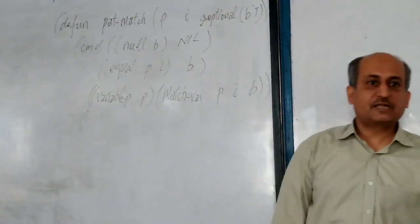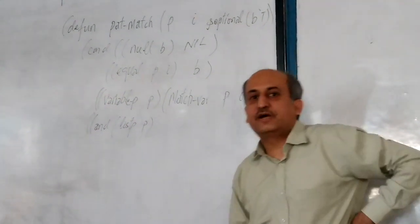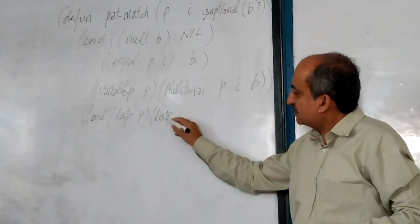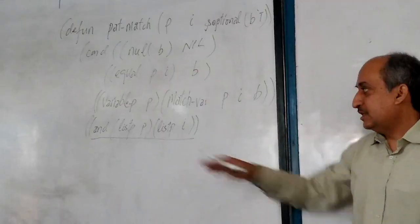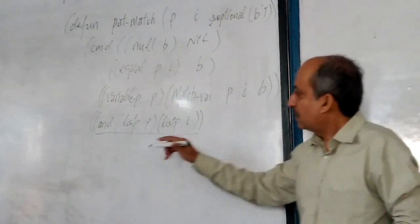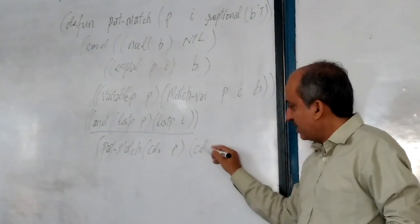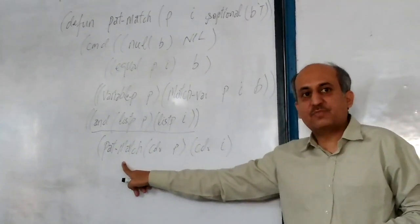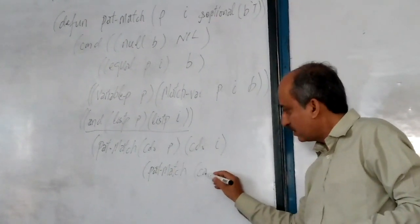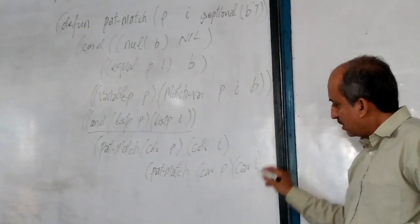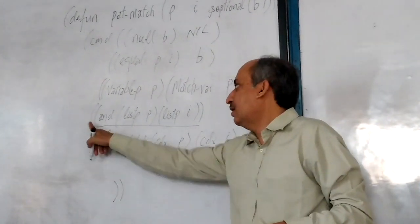Then in the default clause, the last clause, we want to check whether both of its arguments P and I are lists, using the bit-and-list function. If both P and I are lists, then we make a recursive call of FADMatch on car of P and car of I, and the third argument of this FADMatch is the recursive call of the same FADMatch function on cdr of P, cdr of I, and B. Then the last clause ends here.